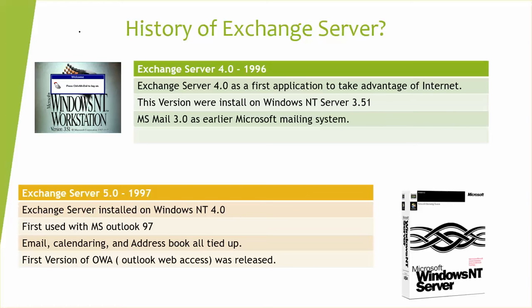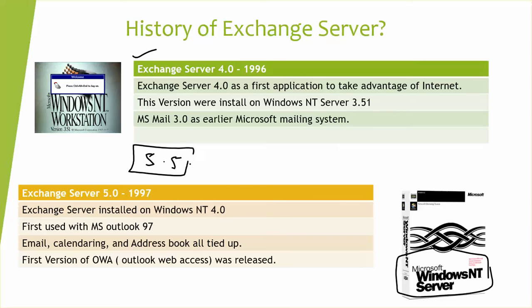Moving on, Exchange 5.0 was released in 1997 and was installed on Windows NT 4.0, as shown in the picture. Most Exchange versions are compatible with specific operating systems. For example, Exchange 5.0 — and Exchange 5.5, which was also released in 1997 — cannot be installed on Windows NT Workstation because it's not compatible.